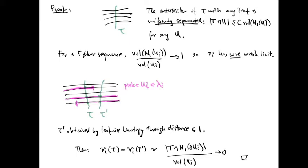Here's the proof. First of all, we need to show that the nu_i have a weak limit. To do this, we need to show that for each transversal tau, the value of nu_i of tau is uniformly bounded.